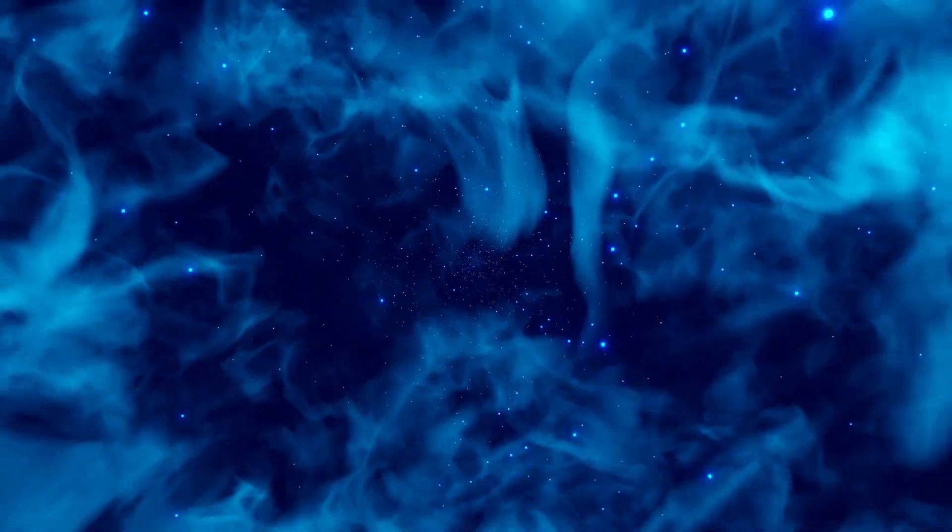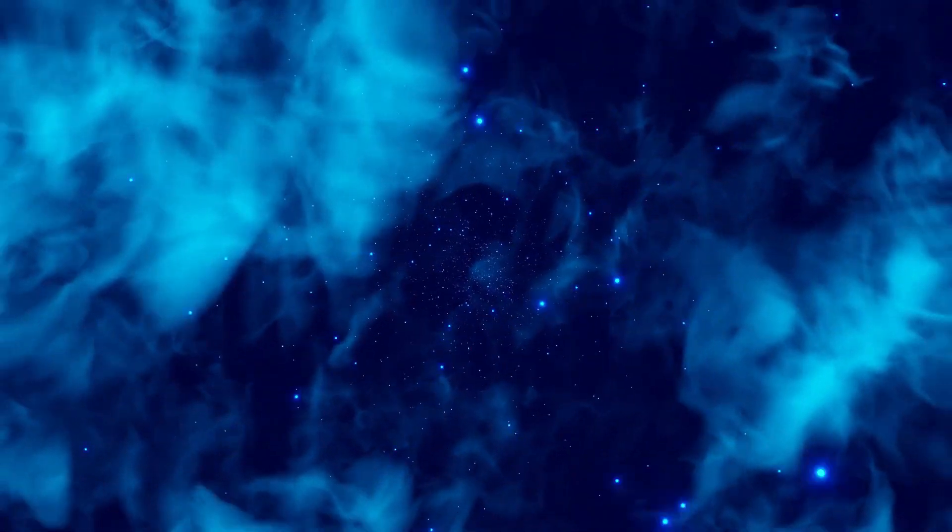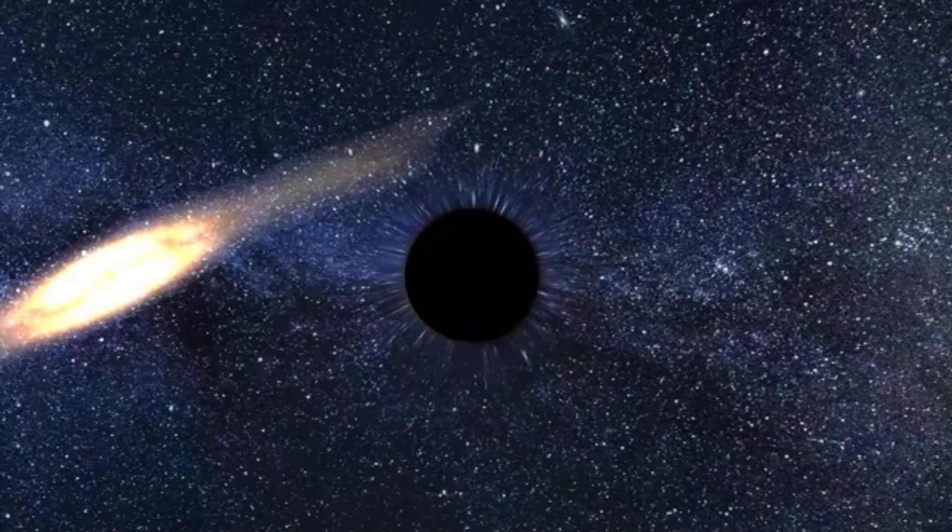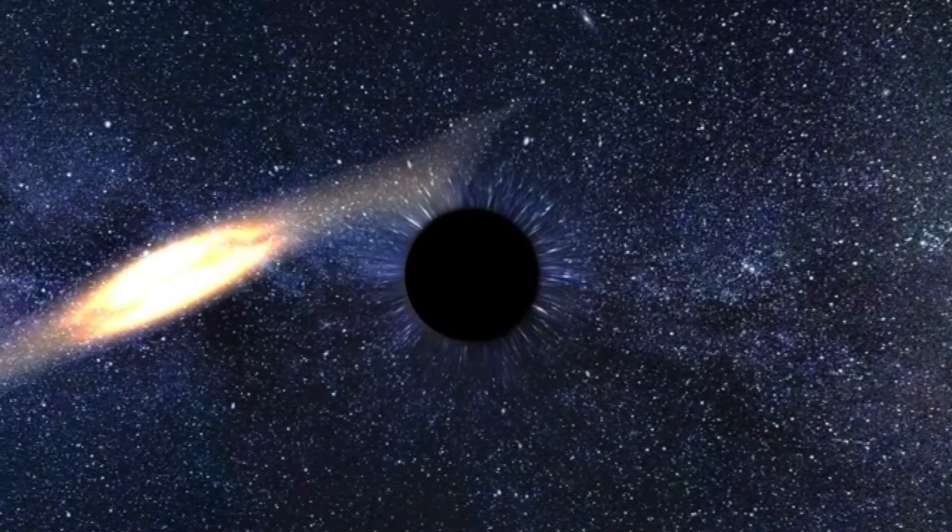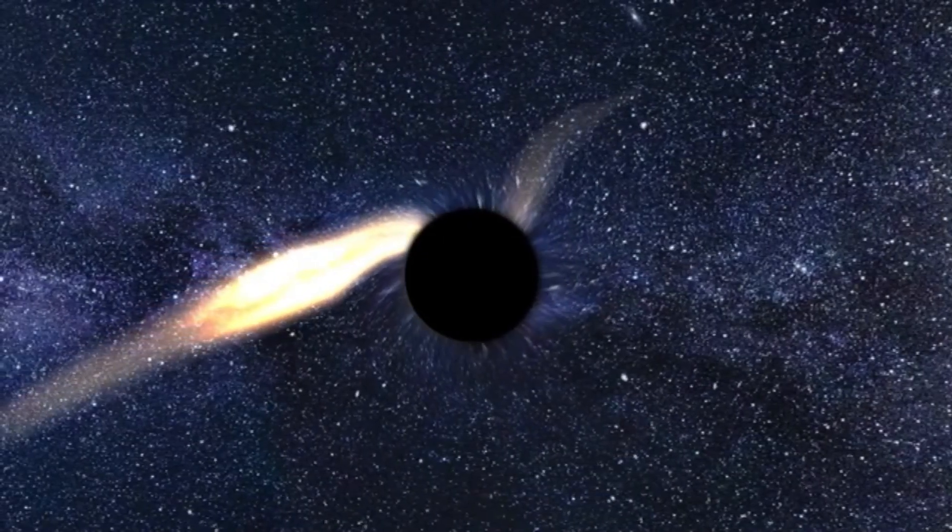In 1916, Albert Einstein's groundbreaking theory of general relativity predicted the existence of black holes. At that time, the notion was purely theoretical. It wasn't until about 50 years later that evidence was discovered confirming that black holes are real objects in space.